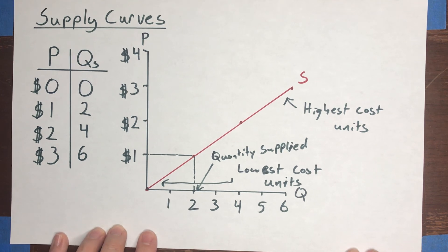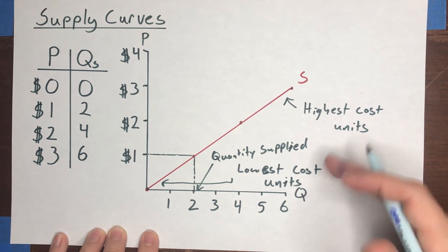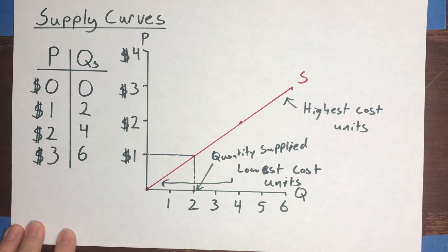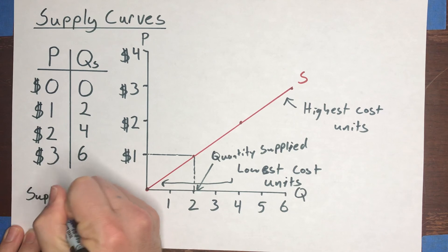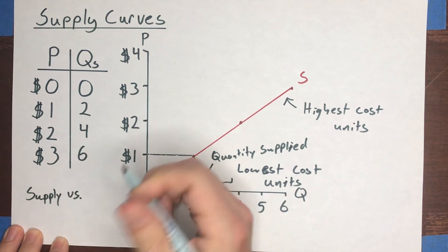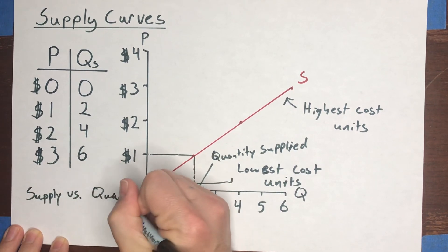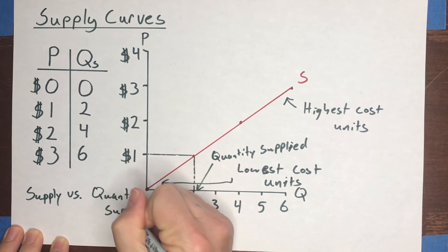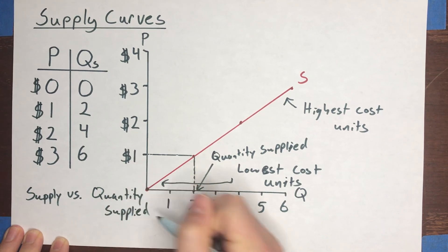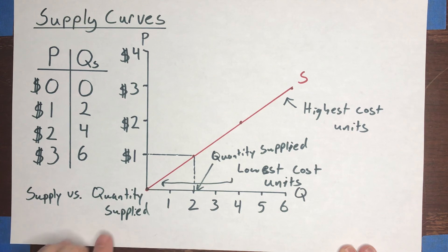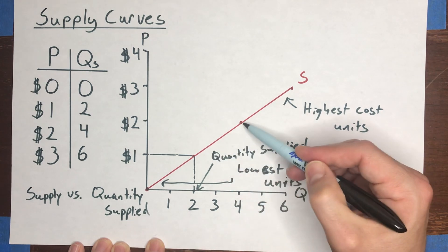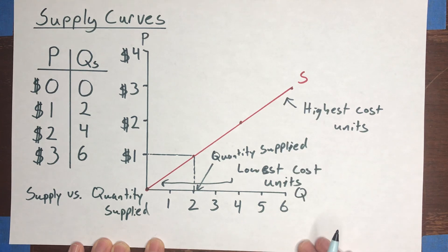Now, just like with demand and quantity demanded, that same concept applies to supply. There is a difference between supply and quantity supplied. That difference is the following. Quantity supplied refers to a specific number of units that sellers would be willing to sell given a specific price that is being offered to them.